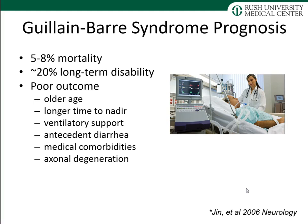The prognosis of Guillain-Barré is variable. About 5–8% of patients will die, and another 20% will have long-term disability. Poor prognostic factors include older age, longer time to maximum symptoms, need for ventilatory support, diarrhea prior to symptom onset, other medical comorbidities, and axonal degeneration — which can occur in severe disease even though myelin is primarily affected.